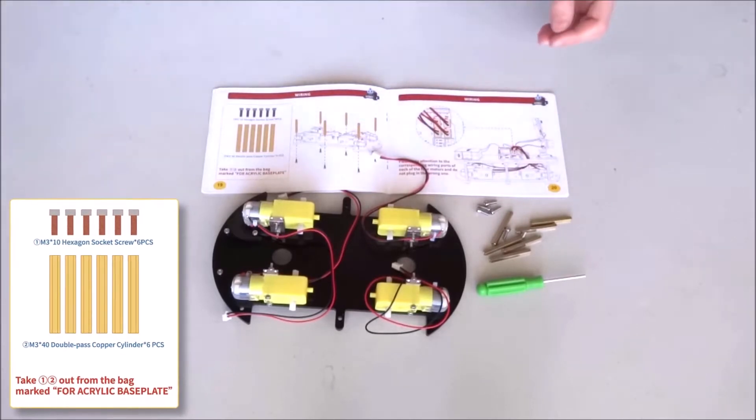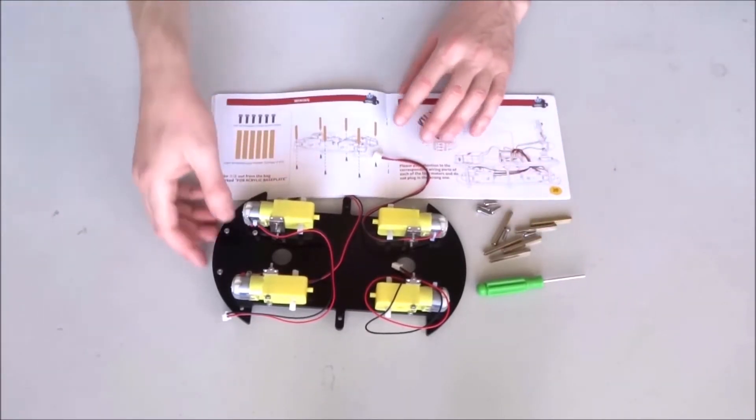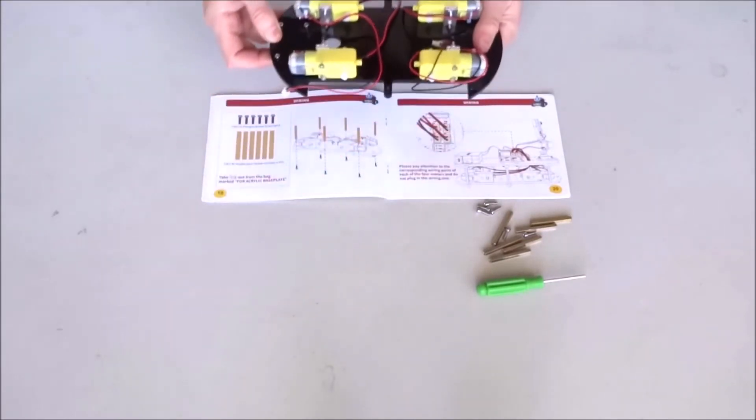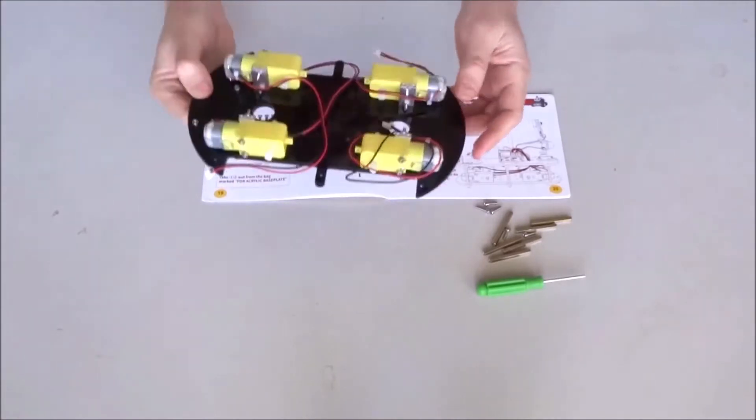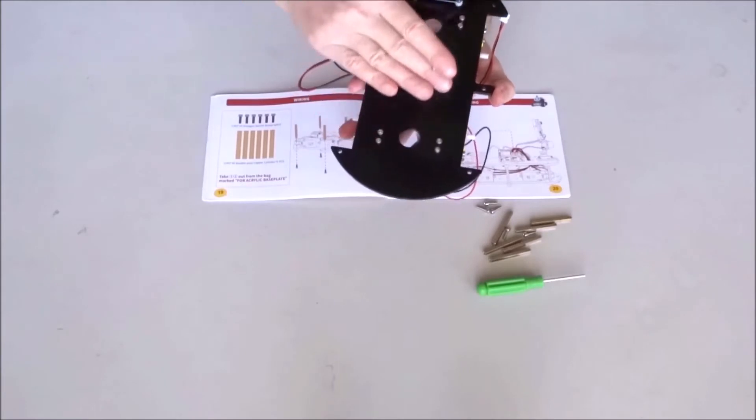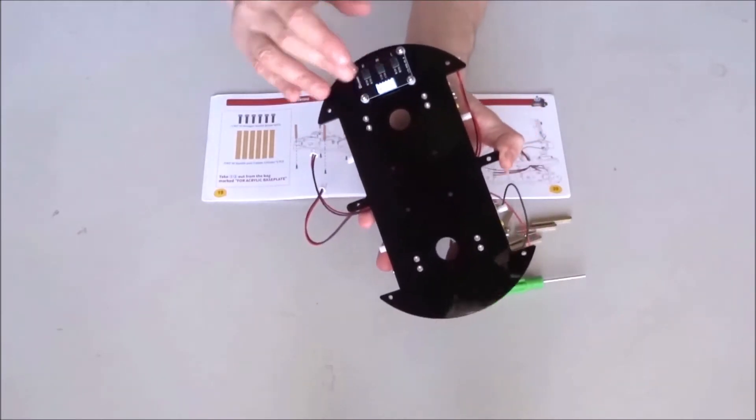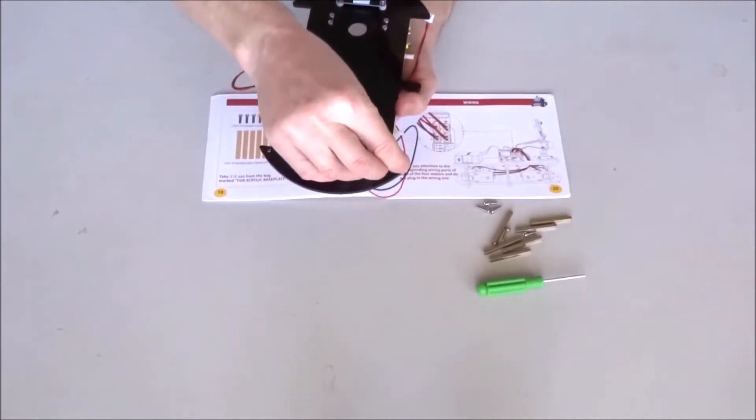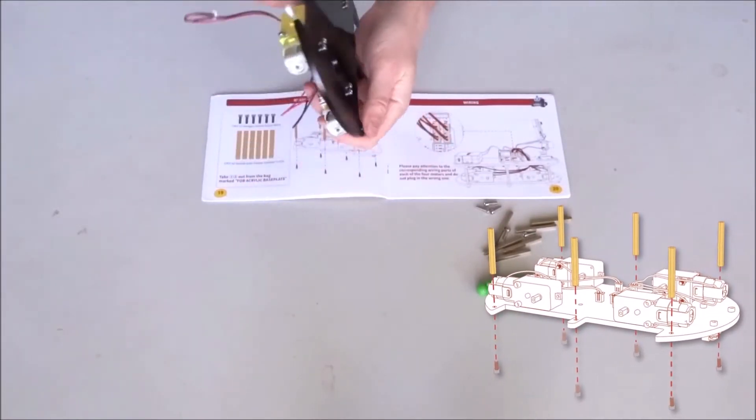Leave the rest aside - we seem to again have some spares. Flip the base plate with the bottom up, the side which has the line following sensors. Insert a bolt in this hole here from the bottom.